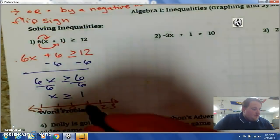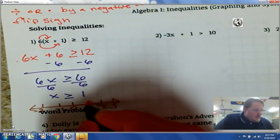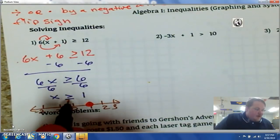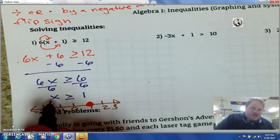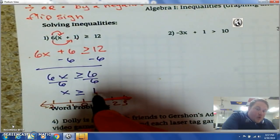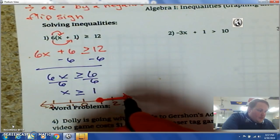I'm going to put my dot at 1. It's going to be closed because there's a line underneath. And I'm going to follow the direction of the arrow so long as the x is on this side. It's greater than 1. So, any number bigger than 1.